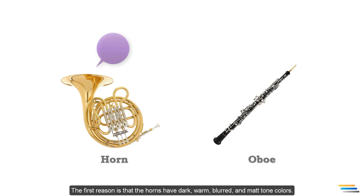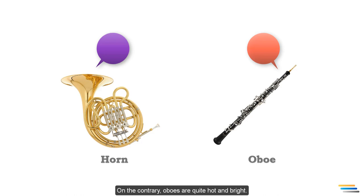The first reason is that the horns have dark, warm, blued and matte tone colors. On the contrary, oboes are quite hot and bright. If the horns are doubled with the oboes, they sound more audible.